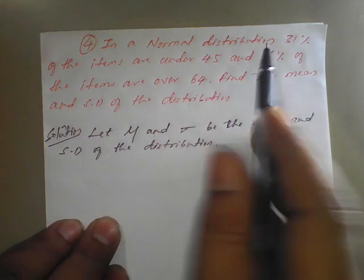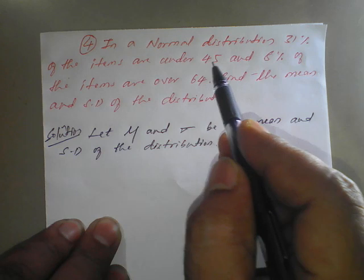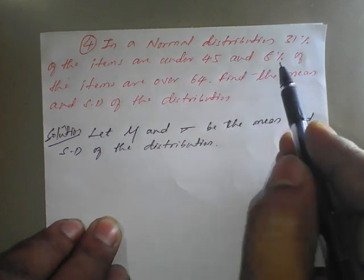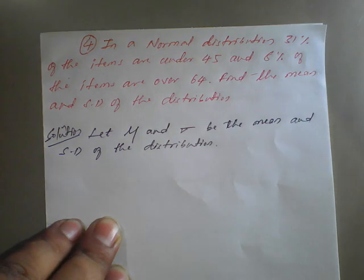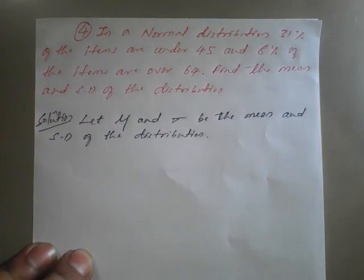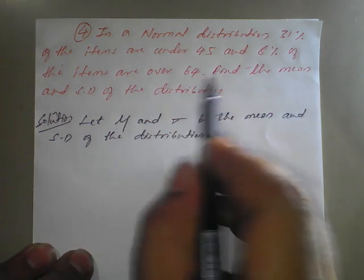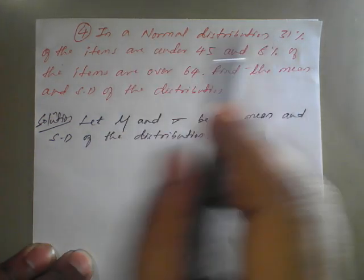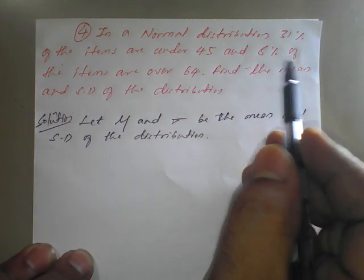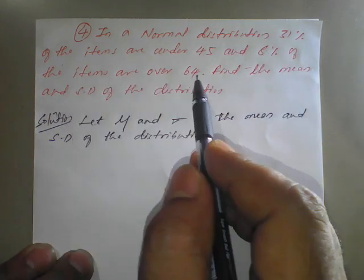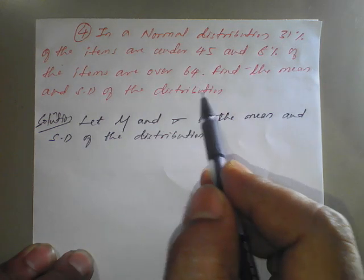In a normal distribution, 31 percent of the items are under 45 and 8 percent of items are over 64. Find the mean and standard deviation of the distribution.